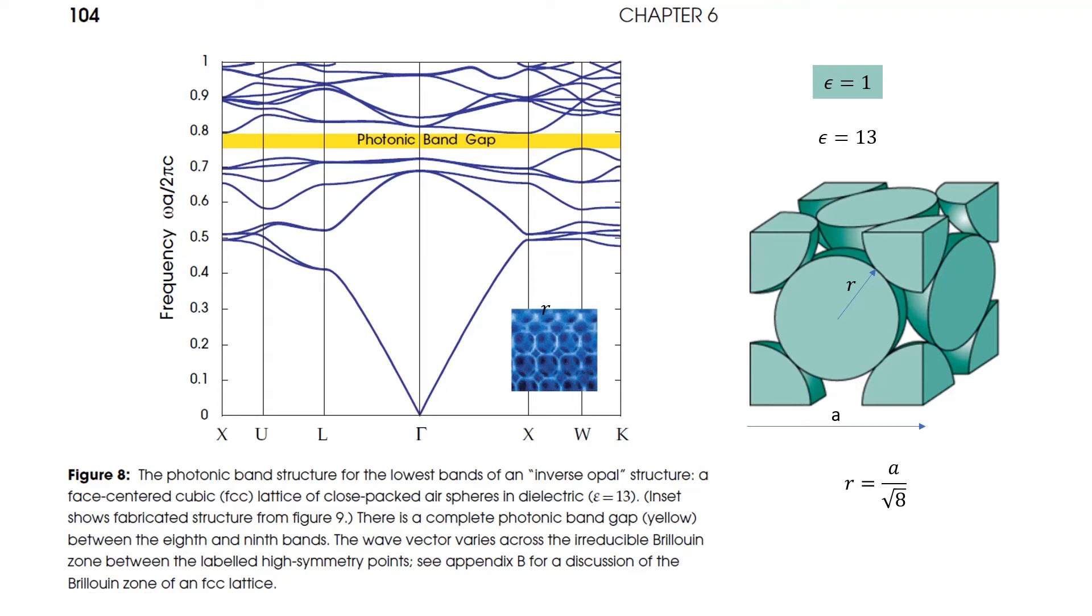In this video I will show you how to get the dispersion diagram of a face-centered cubic lattice, or as some of you call it, hexagonal lattice. Specifically, I chose this example from the book Photonic Crystals: Molding the Flow of Light.